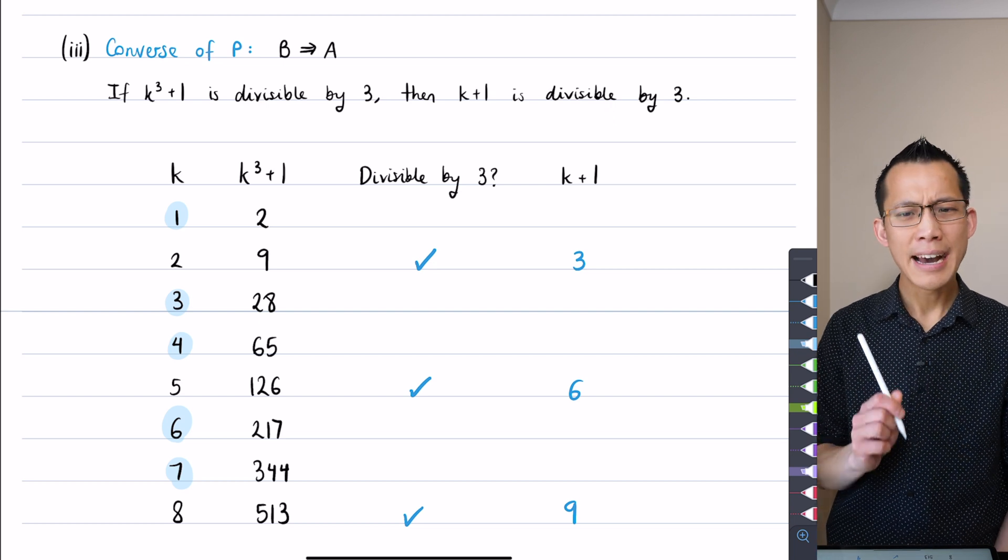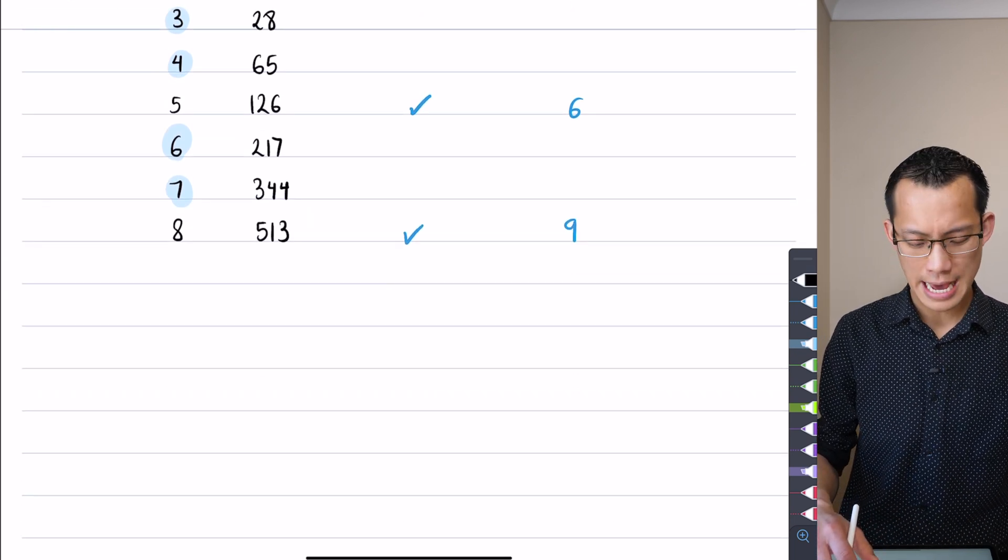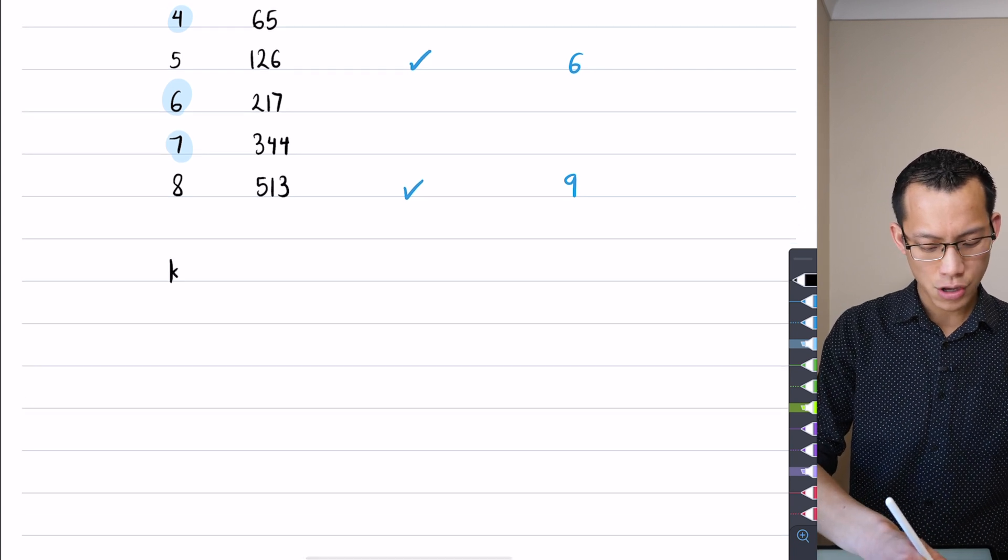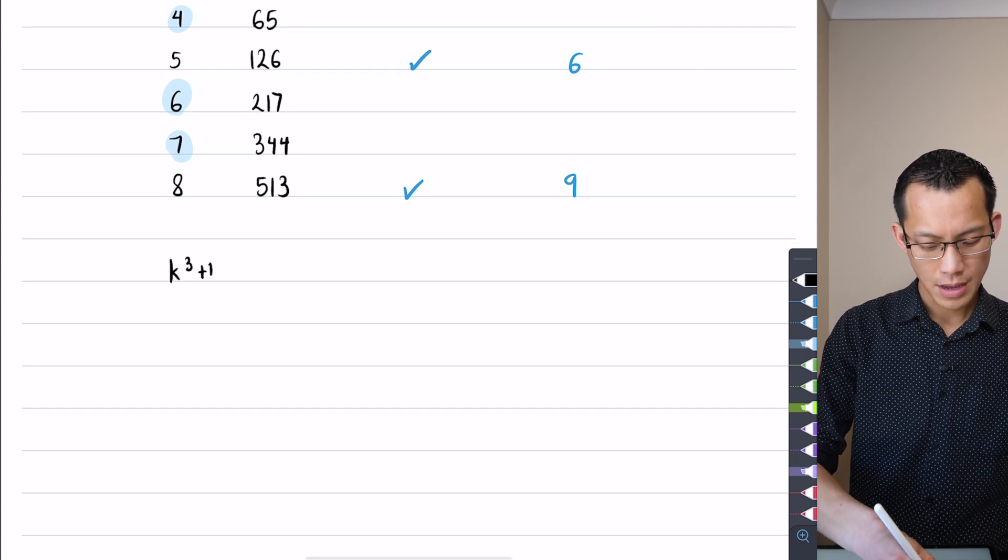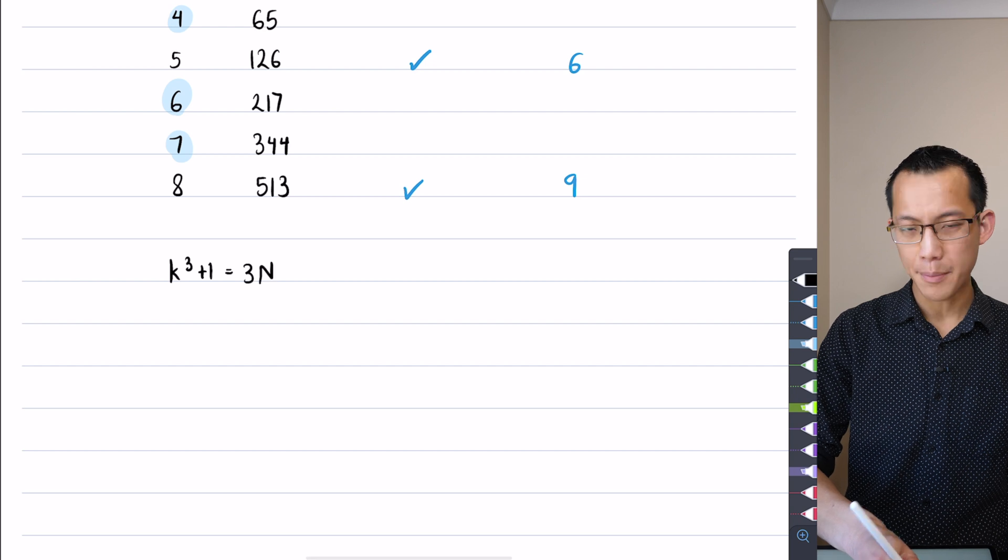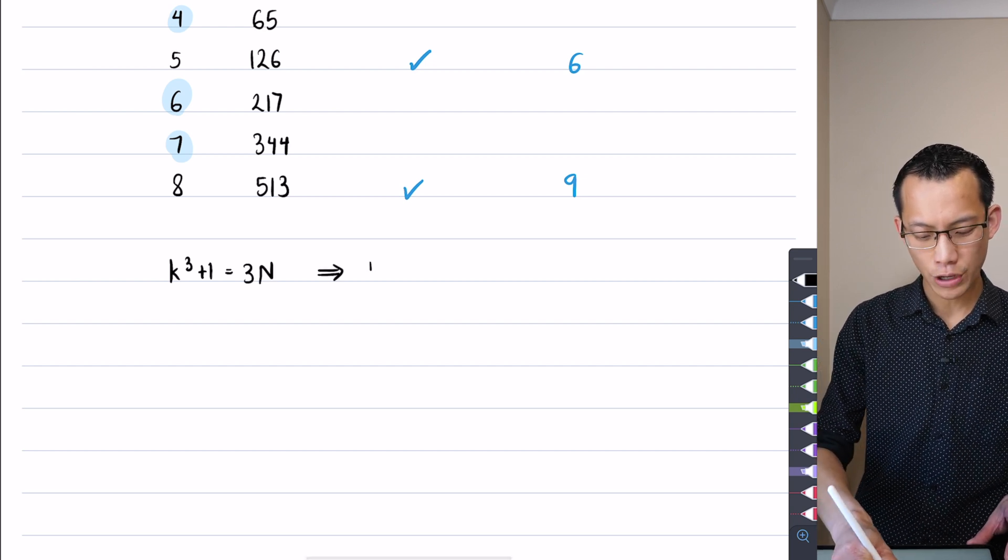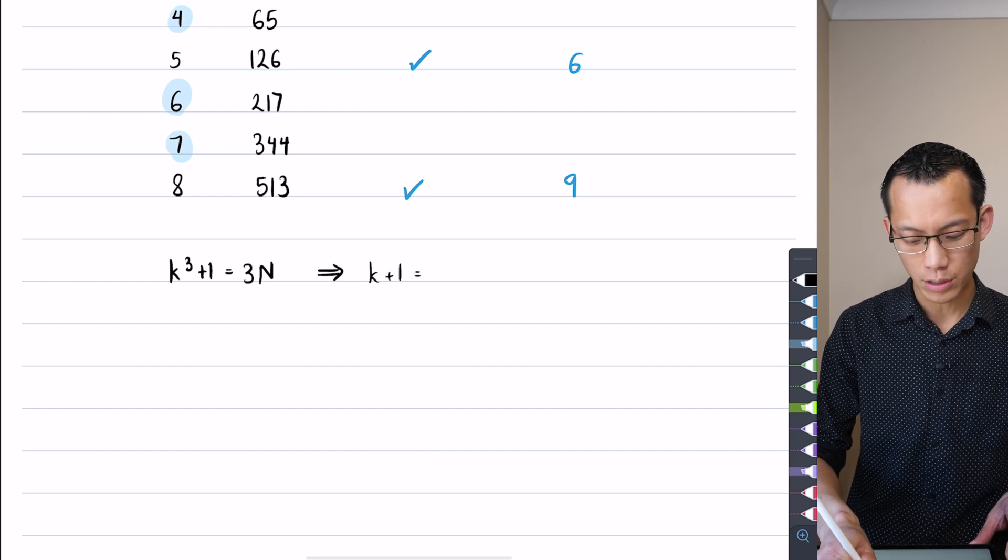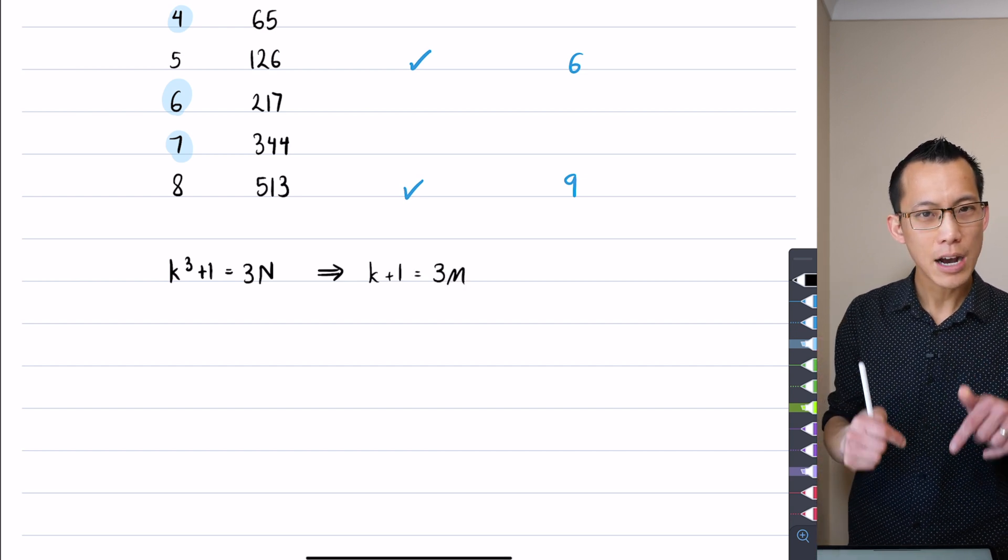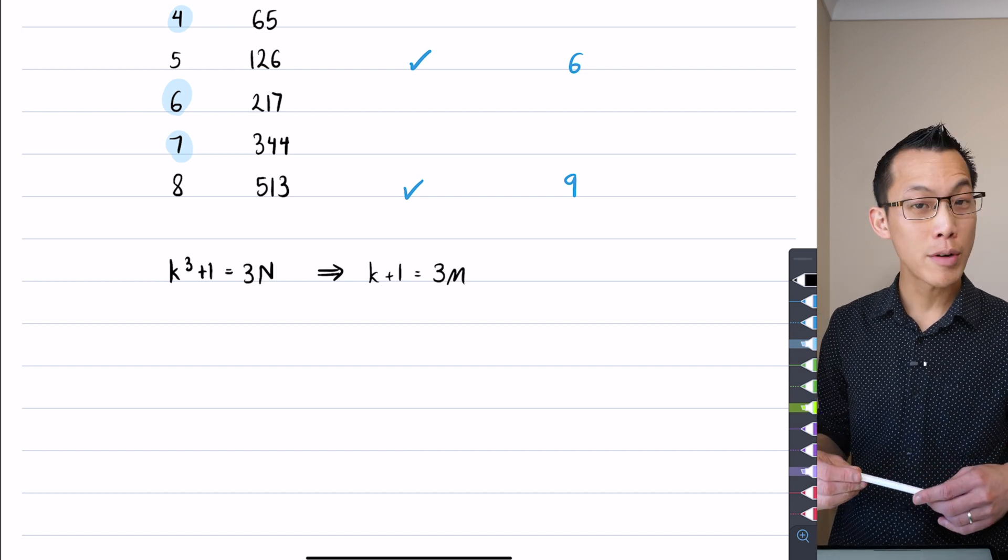So what I think I'm going to try to do is prove this converse. Here's my B part of the statement and here's my A. So if k³+1 is divisible, then k+1 is divisible. How would we try and do this by a direct proof?